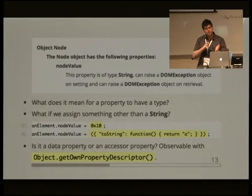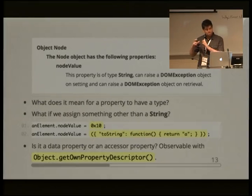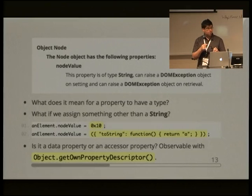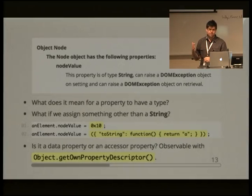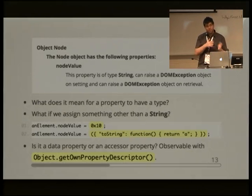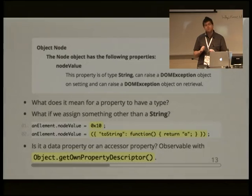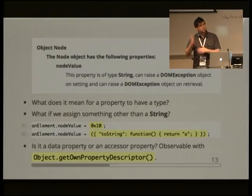The appendix also doesn't say whether nodeValue is a data property or an accessor property. Accessor properties make sense here because when you assign to nodeValue, you want behaviour to happen — it changes text that appears in the web page — which you couldn't do without magic if it were a data property. These things are observable to script, so unspecified observable behaviour is a recipe for incompatible implementations and scripts that work in one browser but not another.